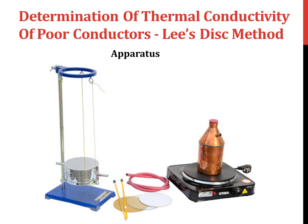The apparatus which are required are as follows. There is a steam boiler which is filled three-fourth with water and whose steam can escape through the outlet present. Rubber tubing is necessary for the flow of steam from the steam boiler to the steam chamber. There are a couple of thermometers required to measure the steady state temperatures. We have insulators in the form of discs such as cardboard, glass, and also gypsum.